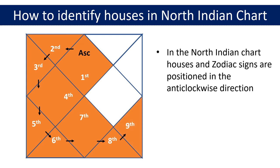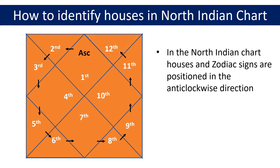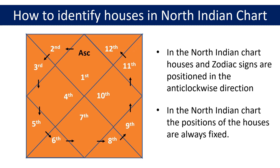The ninth house is again a triangle next to the eighth house as you can see on the screen. By now you would have got the idea about how houses are placed in the North Indian chart. The tenth house is the diamond shaped rectangle highlighted in the chart. Moving on, the eleventh house is the triangle adjacent to the tenth house, and finally the twelfth house is the triangle adjacent to the eleventh house. So these are the twelve houses in the North Indian chart and their positions are always fixed.